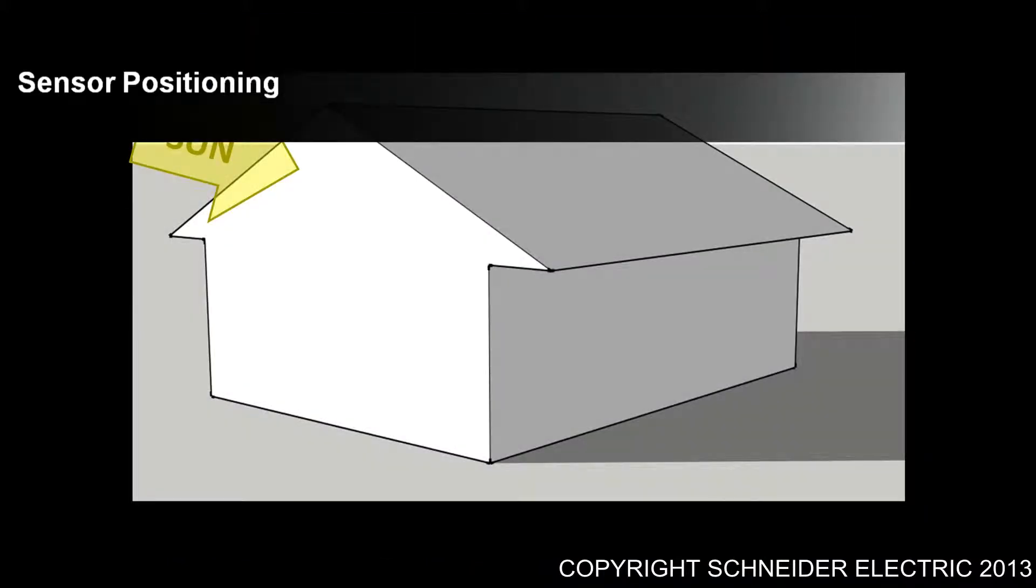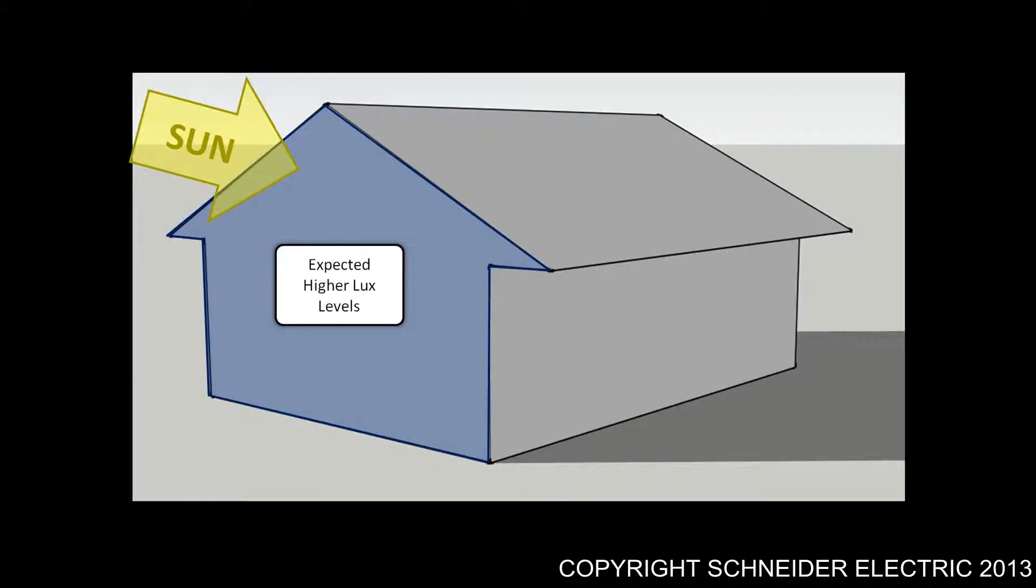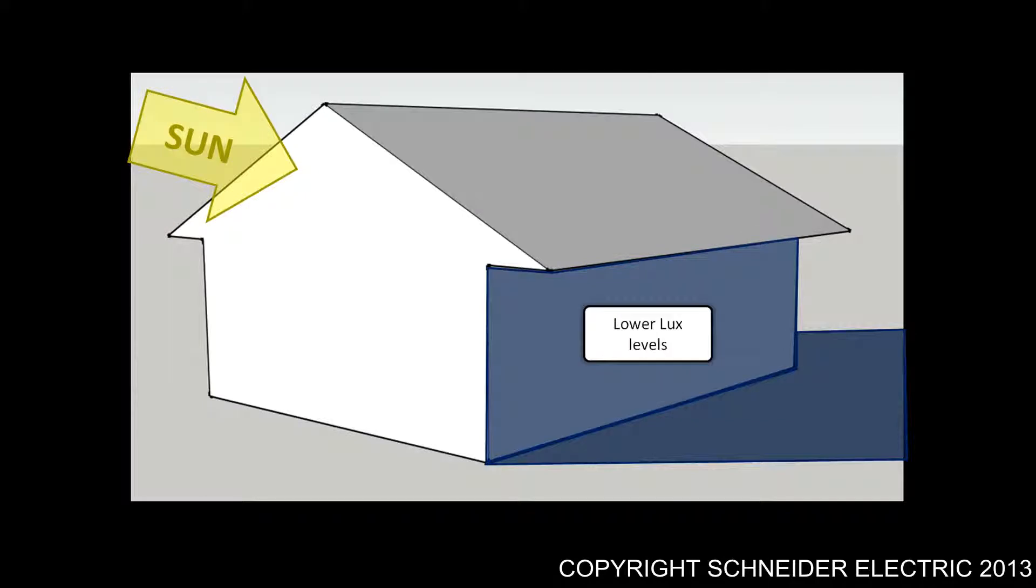Another thing to take into consideration when installing these sensors is sensor positioning. There's this misconception that if you install sensors outside, they're all going to have the same lux level. That's not necessarily the case, because if you've installed sensors where they're going to be exposed to sunlight, you're going to have to set those particular sensors at a higher target lux level than those areas that aren't exposed to the sun.